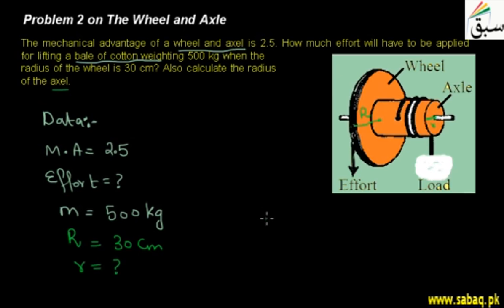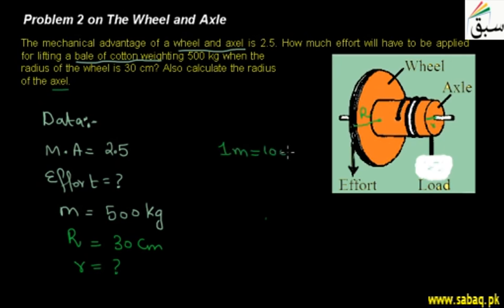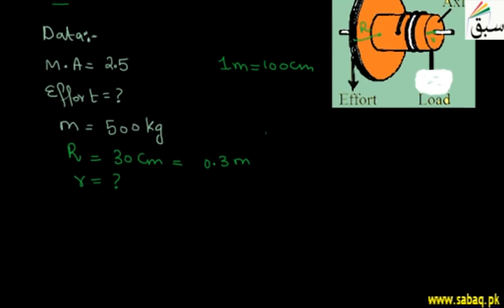Now we go to the solution. Before that, we check whether the quantities given are in consistent units or not. Mechanical advantage is a unitless quantity, mass is given in kg. But the radius is in cm, which we need to convert: 1 meter equals 100 cm, so 30 cm divided by 100 equals 0.3 meters.